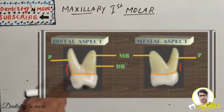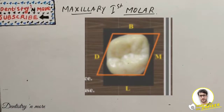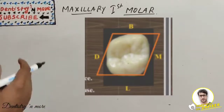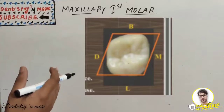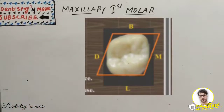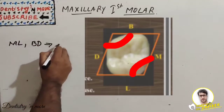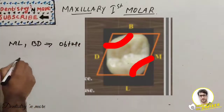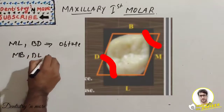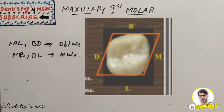On the occlusal aspect, the geometrical outline is rhomboidal. There is disto-buccal convergence. The mesio-lingual and bucco-distal angles are obtuse, whereas the mesio-buccal and disto-lingual angles are acute. The crown is wider lingually and mesially.